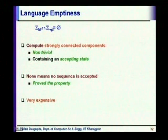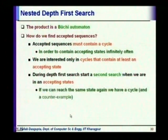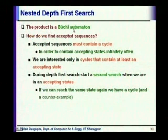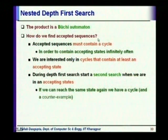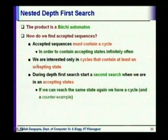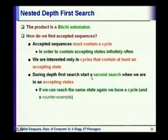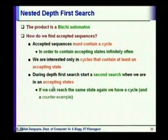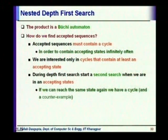The product of the two machines is a Büchi automaton again, since the acceptance criteria is still the same. Accepted sequences must contain a cycle — otherwise we cannot visit the same state infinitely often. We are interested only in cycles that contain at least one accepting state. During depth-first search, we can start a second search when we are in an accepting state. This is the most naive algorithm for finding accepting runs in the product automaton; later we will see there are better methods.